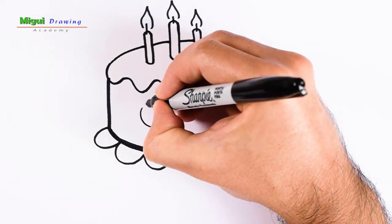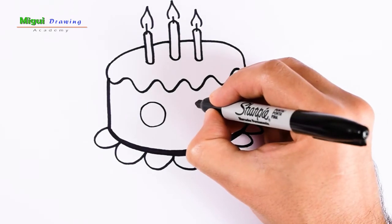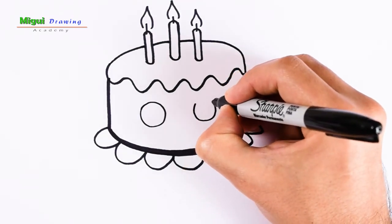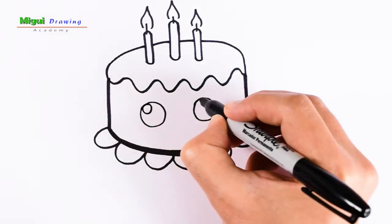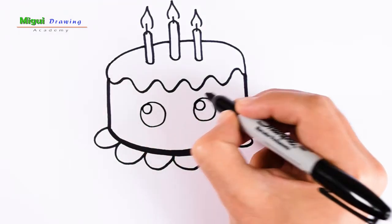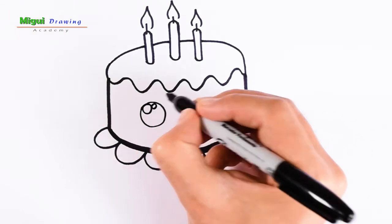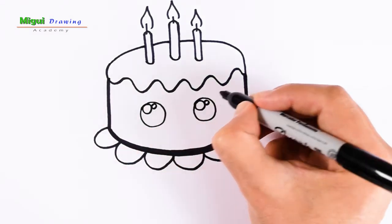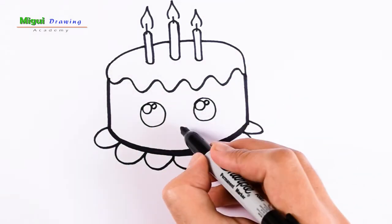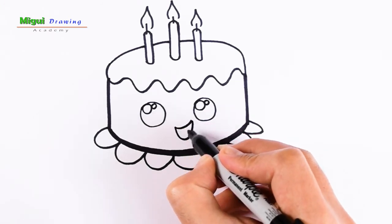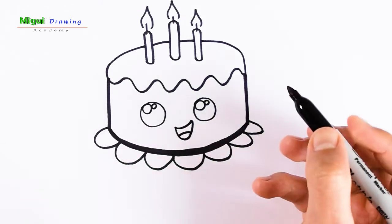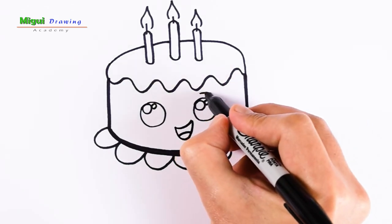Let's do two circles for the eyes with two small circles, the smile, and add some eyebrows.